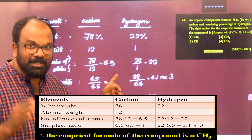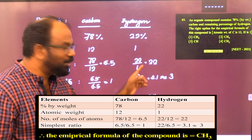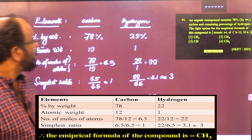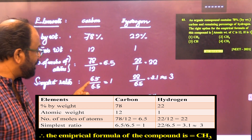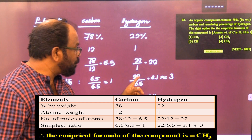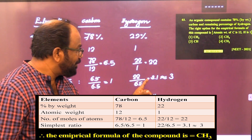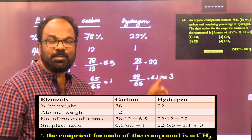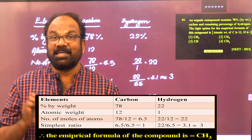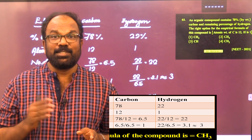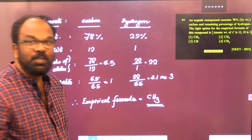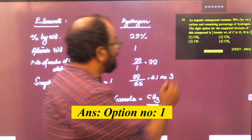The smallest number is 6.5, so dividing both by 6.5: the simplest ratio for carbon = 6.5/6.5 = 1, and for hydrogen = 22/6.5 ≈ 3. The compound contains carbon and hydrogen in the ratio 1:3, so the empirical formula is CH₃. The answer is option 1.